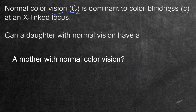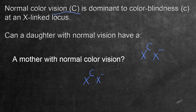What about a mother with normal color vision? The daughter still needs at least one dominant C. For the mother to have normal color vision, she also needs at least one dominant allele. In this case, it's possible regardless of the father's genotype — the father can be colorblind or normal visioned — because the mother with normal vision will donate a dominant allele to the daughters, giving them normal vision as well.